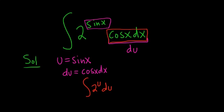The integral of 2 to the u — it's a formula. It's 2 to the u, and then you divide by the natural log of the base. In this case, it's natural log of 2. And then don't forget to put the plus C.